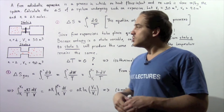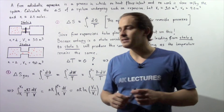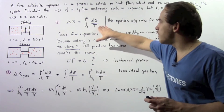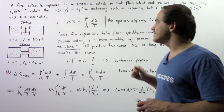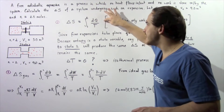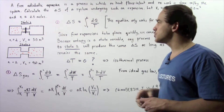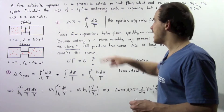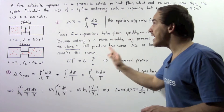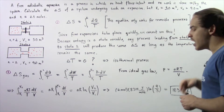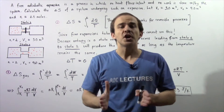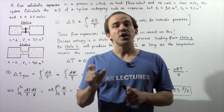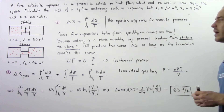In step 1, we determine how to calculate the change in entropy. The change in entropy of any reversible process is given by the integral of DQ divided by T from state 1 to state 2, where DQ is the infinitely small change in energy and T is the temperature in Kelvin. However, this equation only works for reversible processes — essentially very slow processes. Because a free adiabatic expansion is a very quick process, we can't use this equation directly.